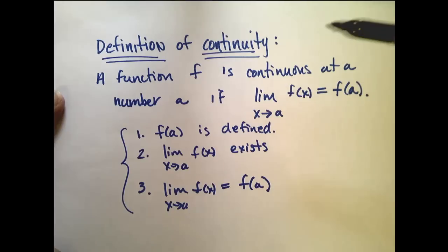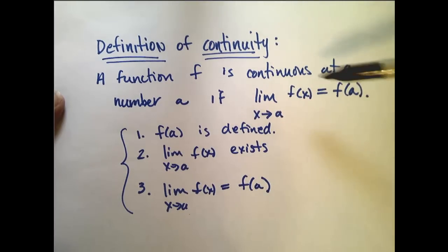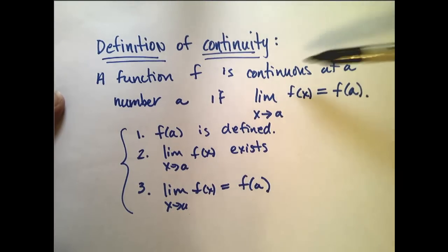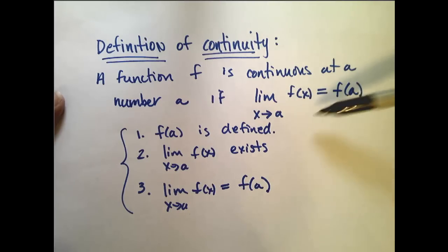Alright, in the last video we defined what it meant for a function to be continuous at a number a. So we say a function f is continuous at a number a if the limit as x approaches a of f of x equals f of a.